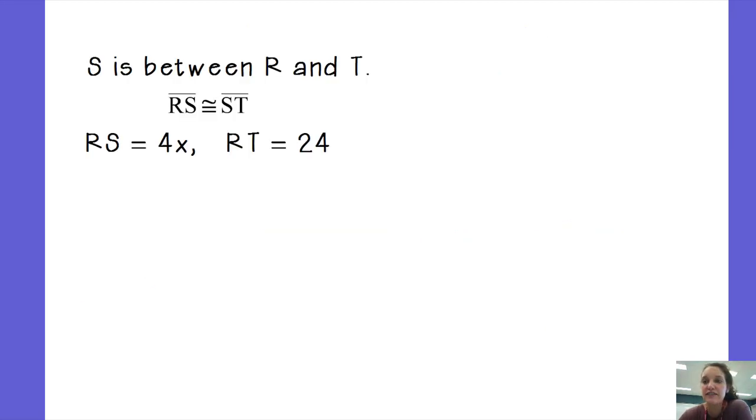So our example is if S is between R and T. Here's R, here's T, here's S. S is in between R and T, and it tells me that segment RS is congruent to segment ST. I'm going to put a tick mark through RS and I'm going to put a tick mark through ST. They are congruent, so they have the same length.